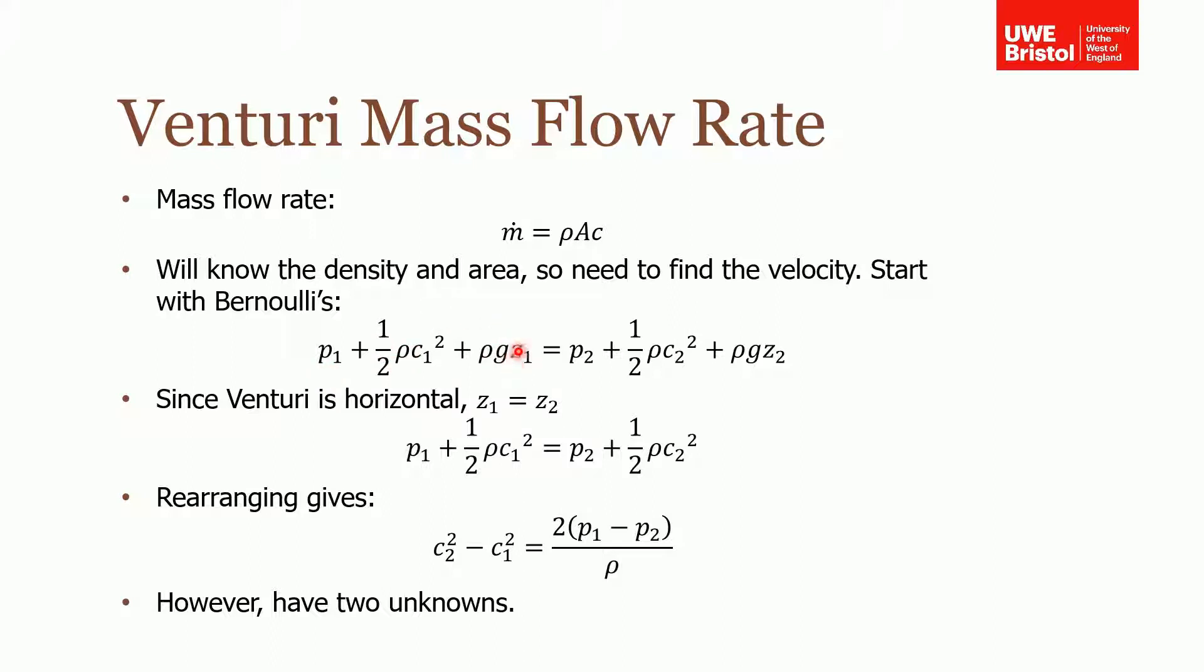So remembering from Bernoulli's that Bernoulli's is the static pressure plus dynamic pressure plus a potential pressure term is a constant. So from one to two you can write it like this. Now most venturis will be horizontal. It's not always the case, but mostly they are. So assume in our instance, in our example, it is. So therefore z₁ is equal to z₂. Therefore these terms will cancel.